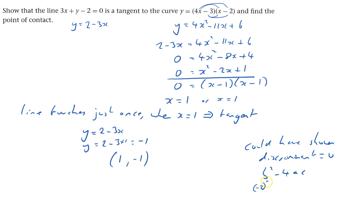Discriminant b squared minus 4ac from this bit here. b is negative 2, so negative 2 squared minus 4 times a is 1, times c is 1, so that is 4, take away 4, which equals 0, therefore tangent.